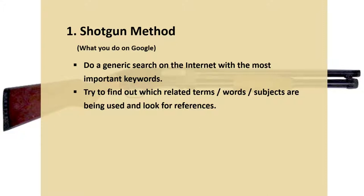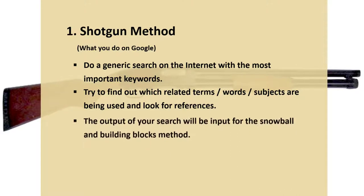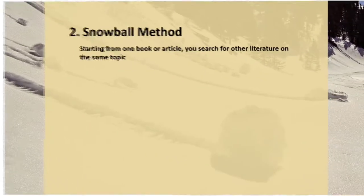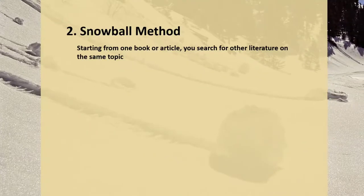While you are looking through the results of a Shotgun search, try and find which related terms, words, or subjects are being used in the sources that come up, and watch for sources that exactly fit what you are looking for. You'll use these later in the Snowball and Building Blocks methods.